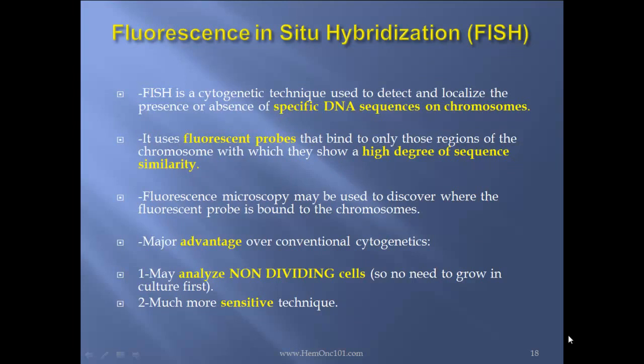FISH — fluorescent in situ hybridization — is a cytogenetic technique used to detect and localize the presence or absence of a specific DNA sequence on chromosomes. It uses fluorescent probes that bind only to regions of chromosomes with which they show a high degree of sequence similarity. Fluorescent microscopy may be used to discover where the fluorescent probe is bound to the chromosome. Major advantages over conventional cytogenetics: one, they analyze non-dividing cells — no need to grow in culture; two, it is a much more sensitive technique.